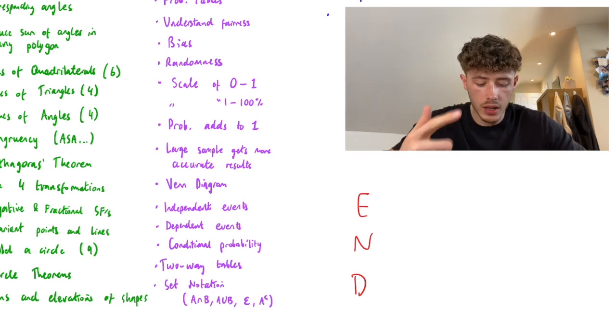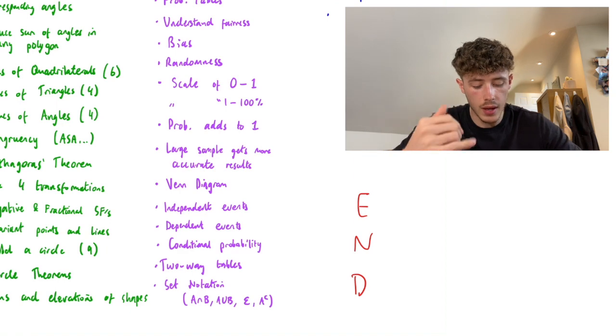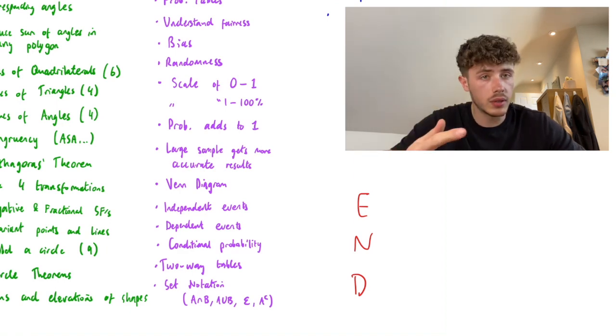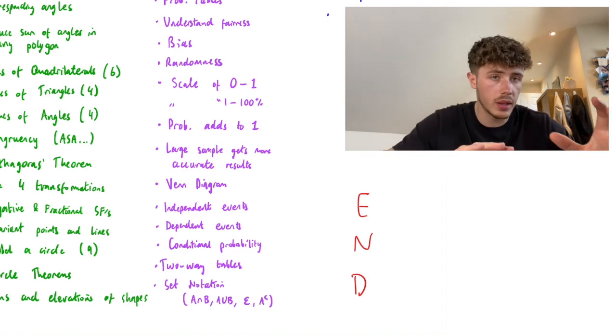Venn diagrams, independent events, dependent events, conditional probability, two-way tables, and set notation, so A intersection B or A union B.